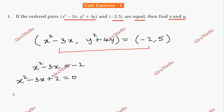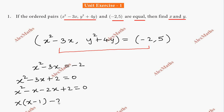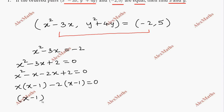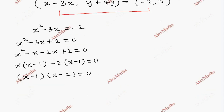So x²-3x plus 2 equals 0. Splitting the middle term: x²-x-2x+2 equals 0. Factoring: x(x-1) minus 2(x-1) equals 0, giving (x-1)(x-2) equals 0. So x equals 1 or x equals 2.